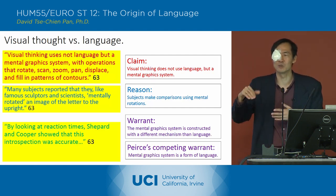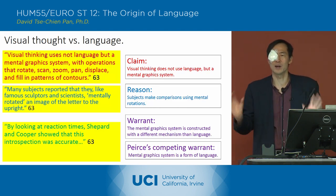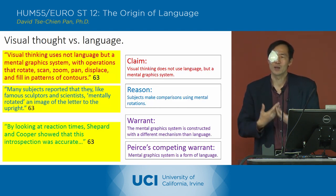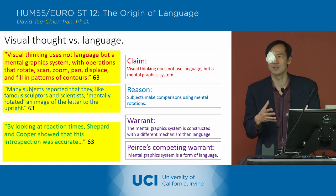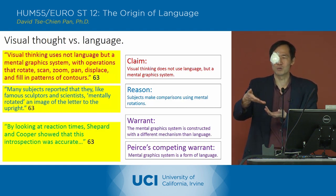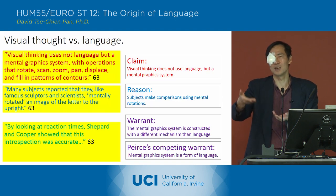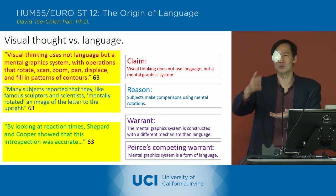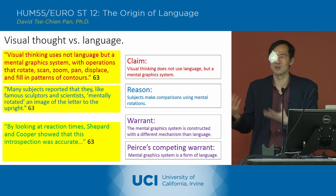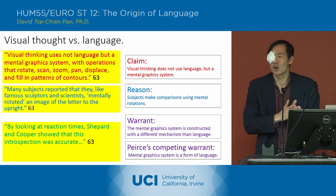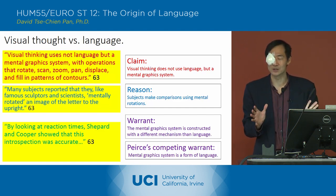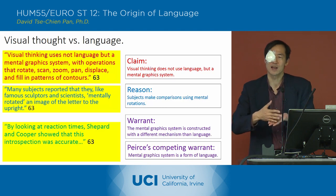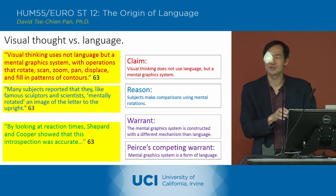Recall the way Peirce had it: he had the letter P and the letter B, and said that the way we make the comparison and see they're the same shape is that we have this interpretant — the process of reflecting the P on its axis, getting a reflection of it, and then it looks like a B. Peirce insists it's a symbolic relationship in which the interpretant — that flipping over the axis — is what allows you to make the comparison.